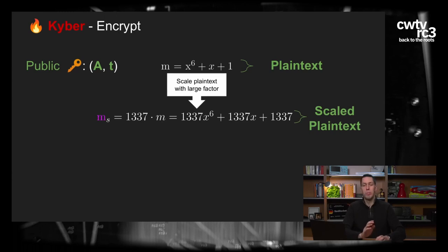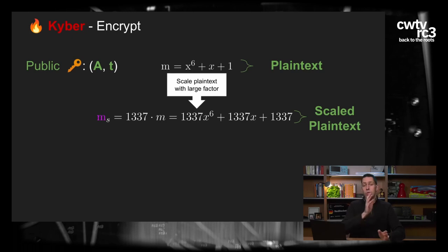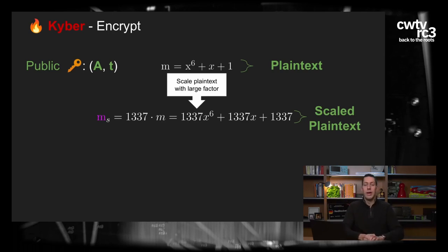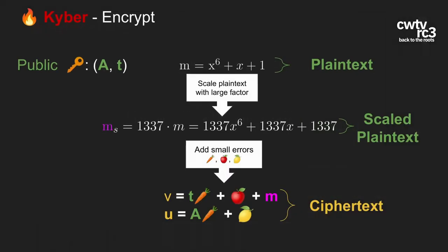Wie machen wir jetzt die eigentliche Verschlüsselung? Wir müssen unser Polynom vergrößern, indem wir es mit einem großen Faktor multiplizieren – in diesem Fall 1337, aber das ist beliebig wählbar. Wir multiplizieren diesen Koeffizienten mit dem Polynom und erhalten denselben Ausdruck, nur mit größeren Koeffizienten. Das ist der nächste Schritt – und dann machen wir die echte Verschlüsselung. In Kyber ist das ziemlich einfach.